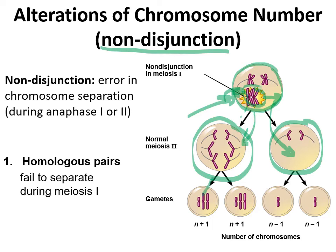The two cells that result from the left-hand side division end up not being exactly haploid — they're essentially haploid plus one. So two gametes would be produced with an extra chromosome in each one, and two gametes would be produced missing a chromosome.